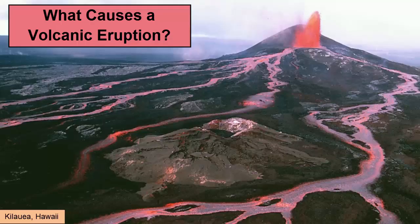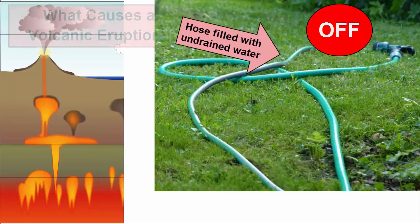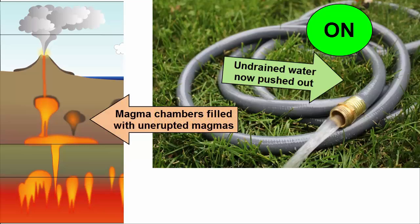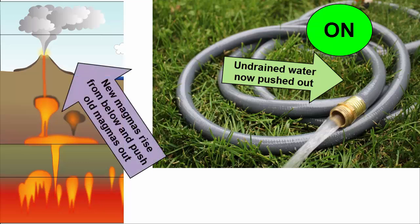What causes a volcanic eruption? How can we simulate one? Let's start with a simple lava eruption and use a garden hose as an analogy. At any given time when the water is turned off, the hose is filled with the water that was present during its last use but never drained. This is similar to magma sitting in a magma chamber. To remove the water, you open the valve to allow more water to move into the hose.